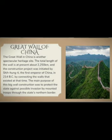The Great Wall of China is another structural heritage site. The total length of the wall is approximately 2,250 km, and the construction project was initiated by Qin Shi Huang, the first emperor of China, in 214 BC by connecting walls that already existed at the time. The main purpose of this great wall was to protect the state against possible invasion by northern troops along the country's northern border.